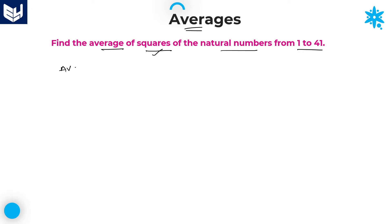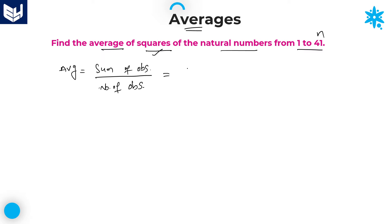Average is equal to — what is meant by average? Sum of observations divided by number of observations. As we are calculating the average of squares of natural numbers from 1 to 41, in the numerator you need to write the sum of squares of natural numbers from 1 to n. The formula for sum of squares of n natural numbers is n(n+1)(2n+1) divided by 6.